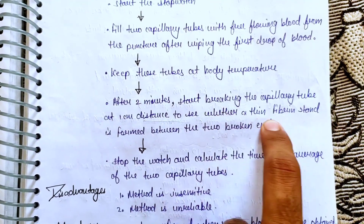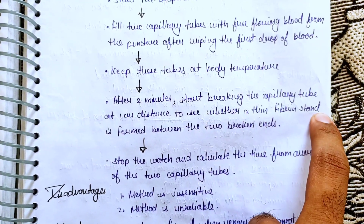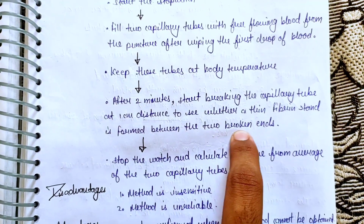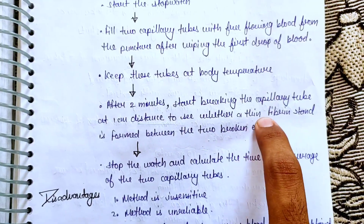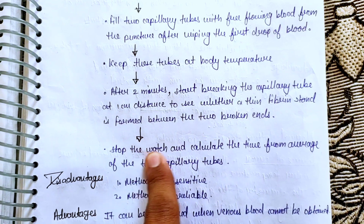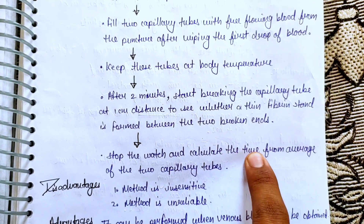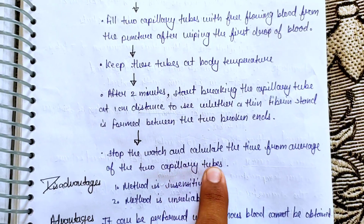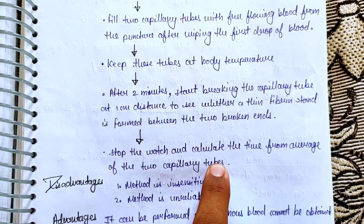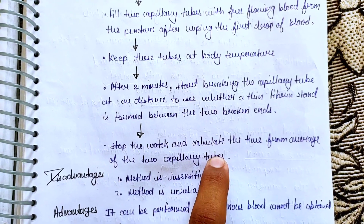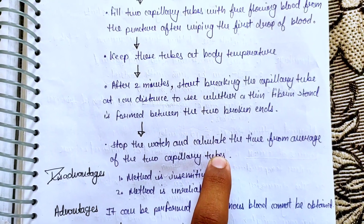Observe what happens — look for the fibrin strand that forms between the two broken ends. Check whether the fibrin strand has formed or not. Stop the watch and calculate the clotting time as the average of the 2 capillary tubes.